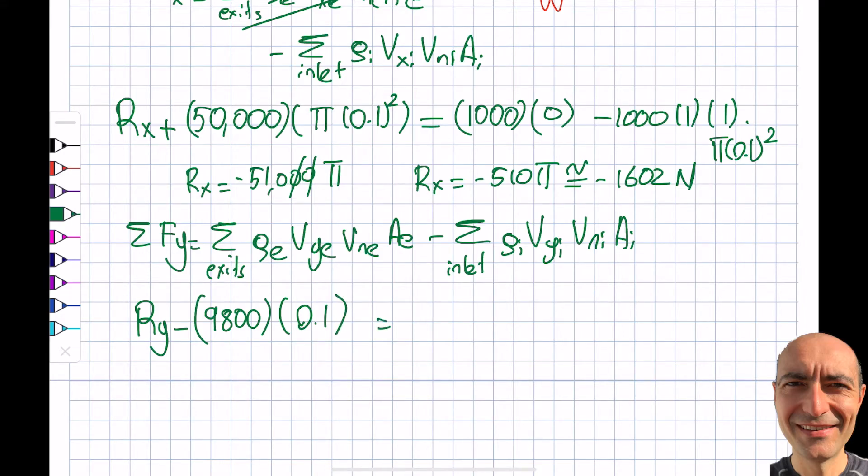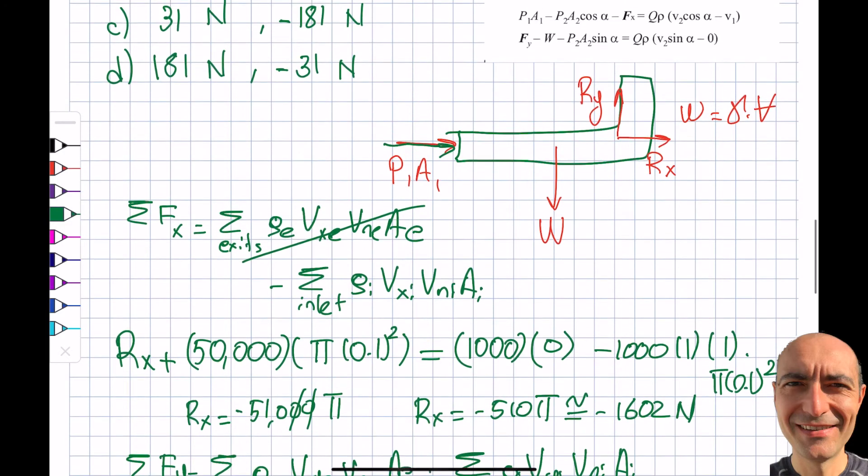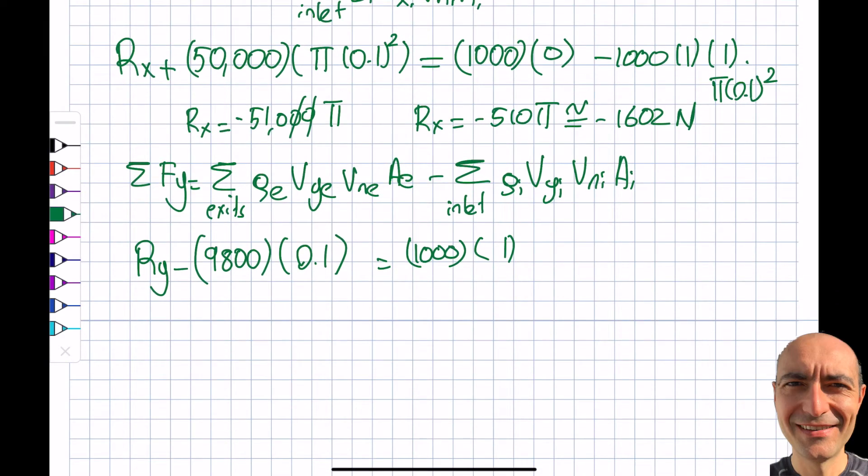It will be equal to... So I have the exit first, the exit will be 1,000. That's the density. So Vy exit, looking over here, Y is pointing up. X is this way, Y is that way. So Vy2, which is the exit, I will get myself 1, which is the meter per second. And Vn inlet will be 1. And A exit will be π(0.1)².